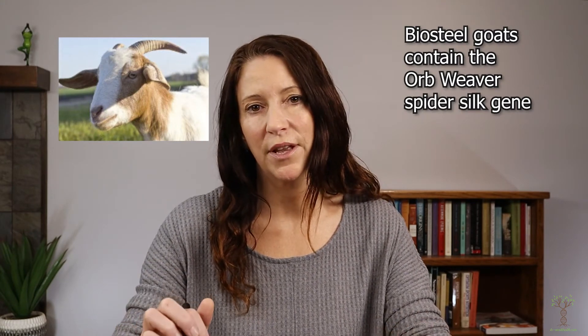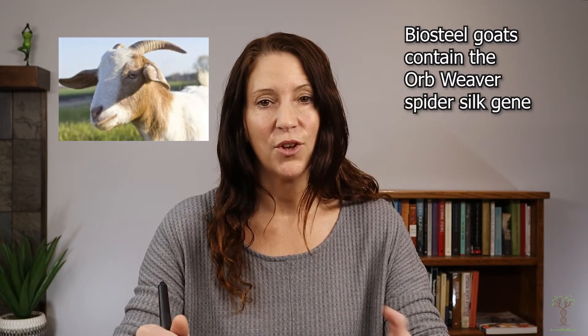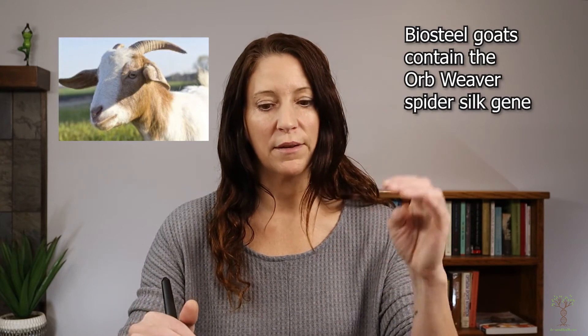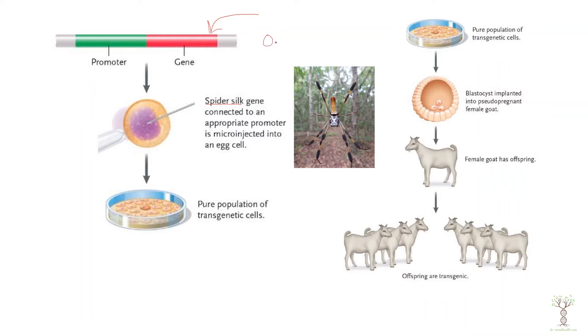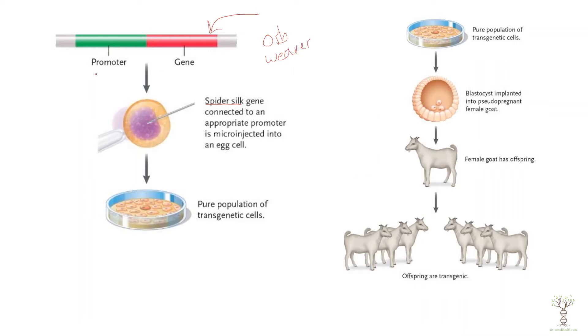The last example is the biosteel goat, where goats produce spider silk in their milk that can be used to make all kinds of products. I'll go through the steps of how to produce a genetically modified animal using the biosteel goat as an example. First, we need a gene that produces spider silk, which comes from an orb weaver spider. That gene must be connected to a very specific promoter, because we only want the spider silk gene expressed in the milk during lactation — not anywhere else.